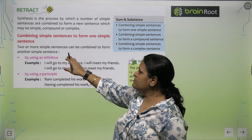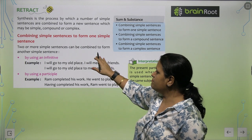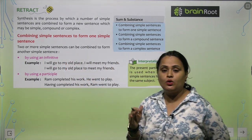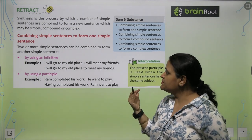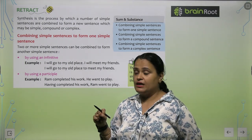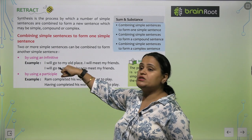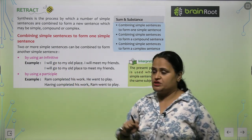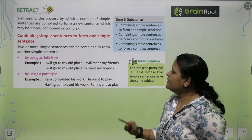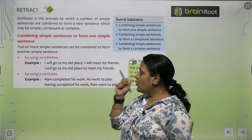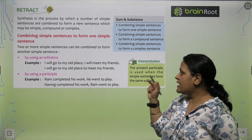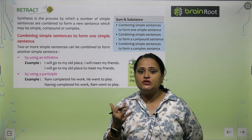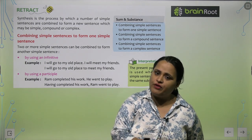Two or more simple sentences can be combined to form another simple sentence. Do ya do se zyada simple sentences combine kar sakte hain, doosra simple sentence banane ke liye. By using an infinitive — for example: 'I will go to my old place. I will meet my friends.' Combined: 'I will go to my old place to meet my friends.'